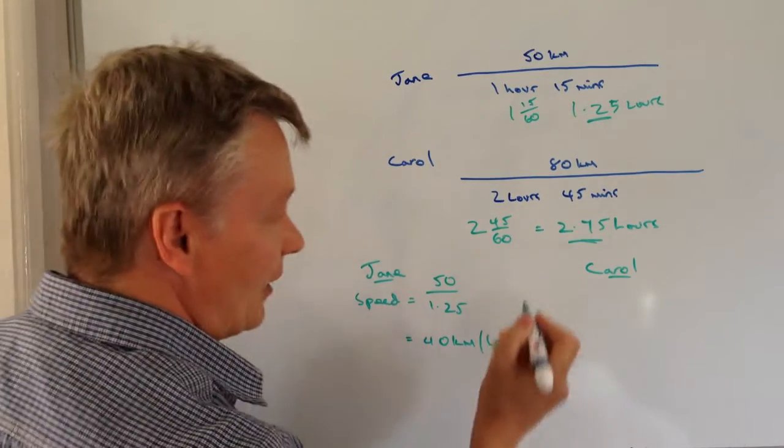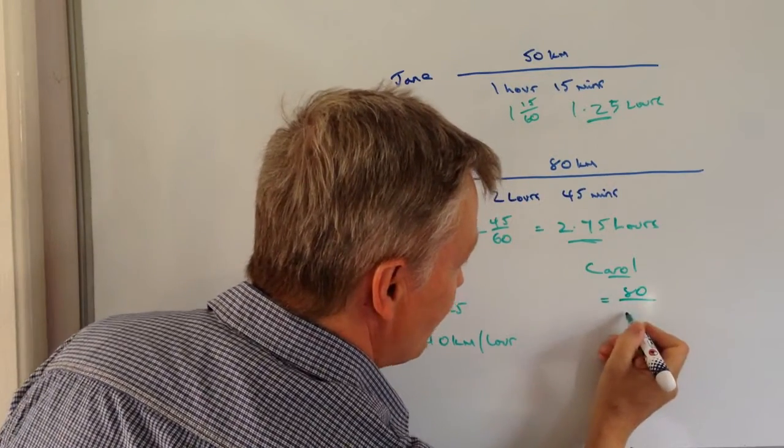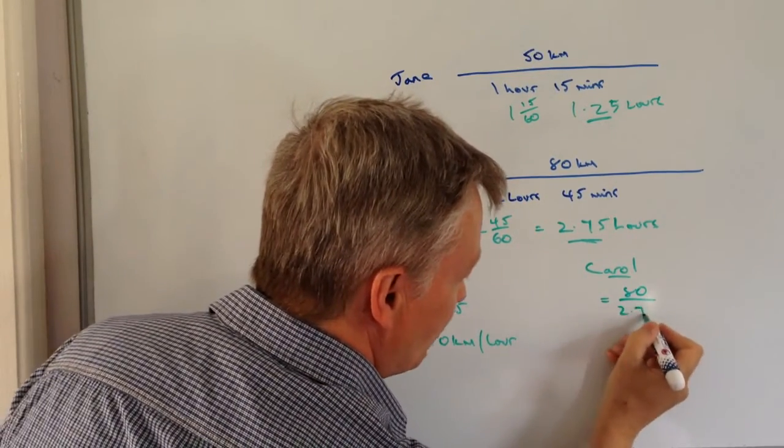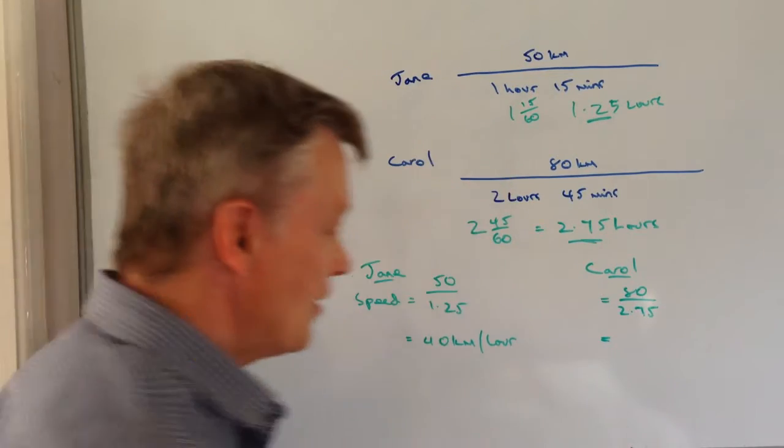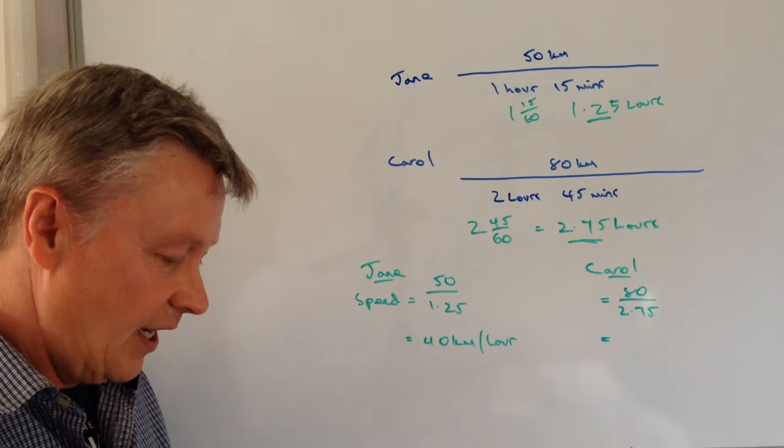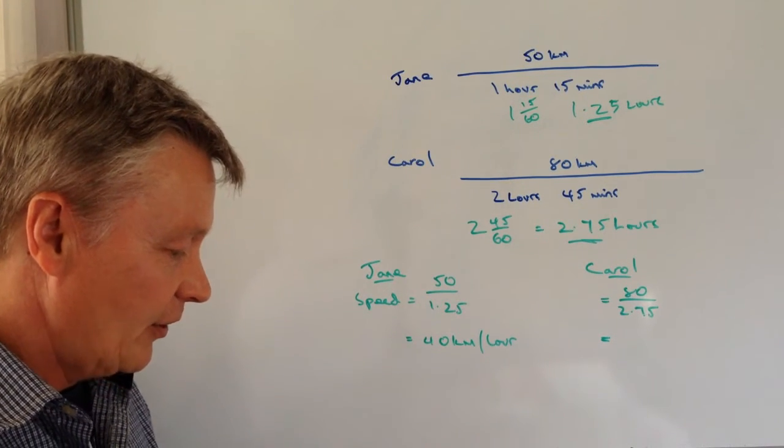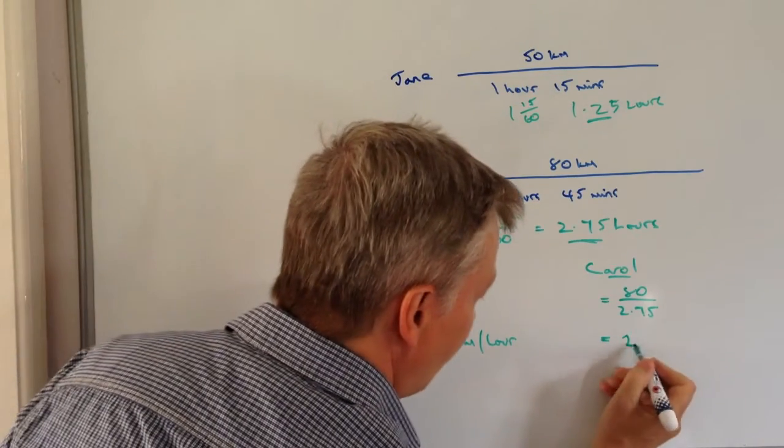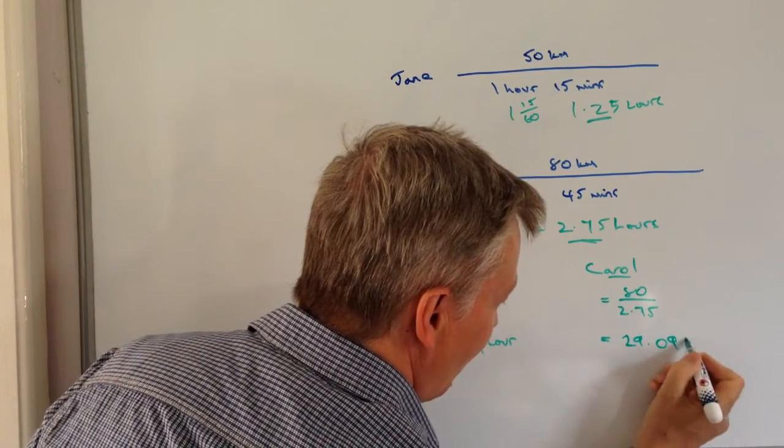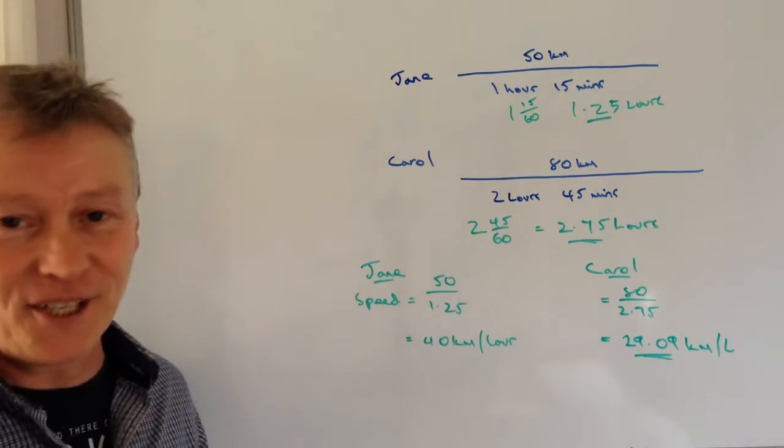Carol's going to do exactly the same, but this time she's got a distance of 80 kilometres and a time of 2.75. So again, if I pop that into my calculator, I get 80 divided by 2.75. And that's going to be 29, so she's considerably slower at 29.09 kilometres per hour.